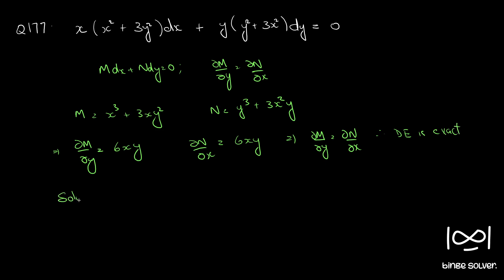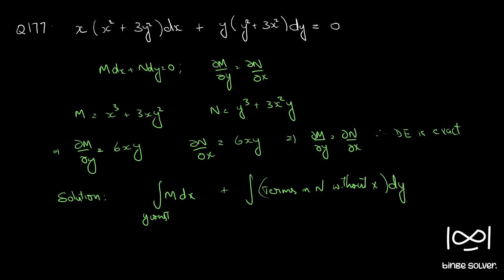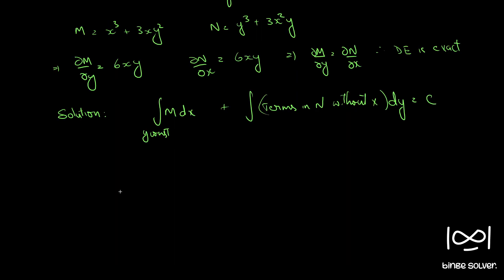The solution for exact equations is given by: integral of M dx (y constant) plus integral of terms in N without x dy equal to c. So we have integral of (x cubed plus 3xy squared) dx plus integral of terms in N without x, which is only y cubed, dy equal to c.